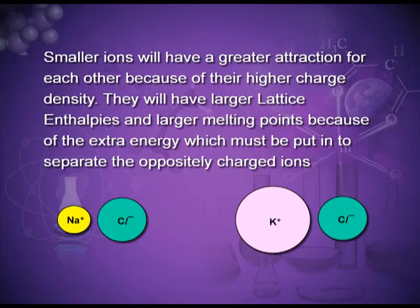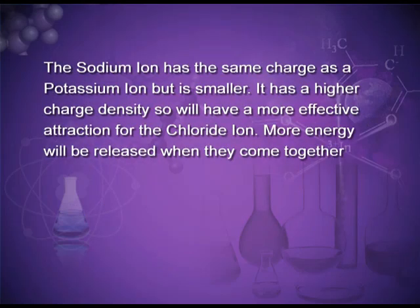From the figure you can see that the size of the sodium ion is smaller than the size of the potassium ion, although both have plus one charge. Both are making a bond with the chloride ion, and the size of the chloride ion is the same for both. Since the size of the sodium ion is smaller, it has higher charge density compared to the potassium ion. Therefore, the bond between sodium ion and chloride ion is stronger compared to the bond between potassium ion and chloride ion.